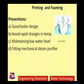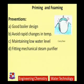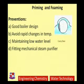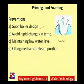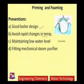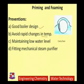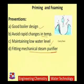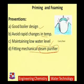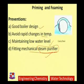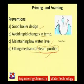To prevent priming, all the causes responsible for it must be removed. If the boiler design is good, if we avoid rapid changes in steam velocity and temperature, if we do not keep the water level too high, and if we fit mechanical steam purifiers that allow only steam particles through and not liquid water, then priming can be avoided. Priming — wet steam formation — may lead to a number of troubles.